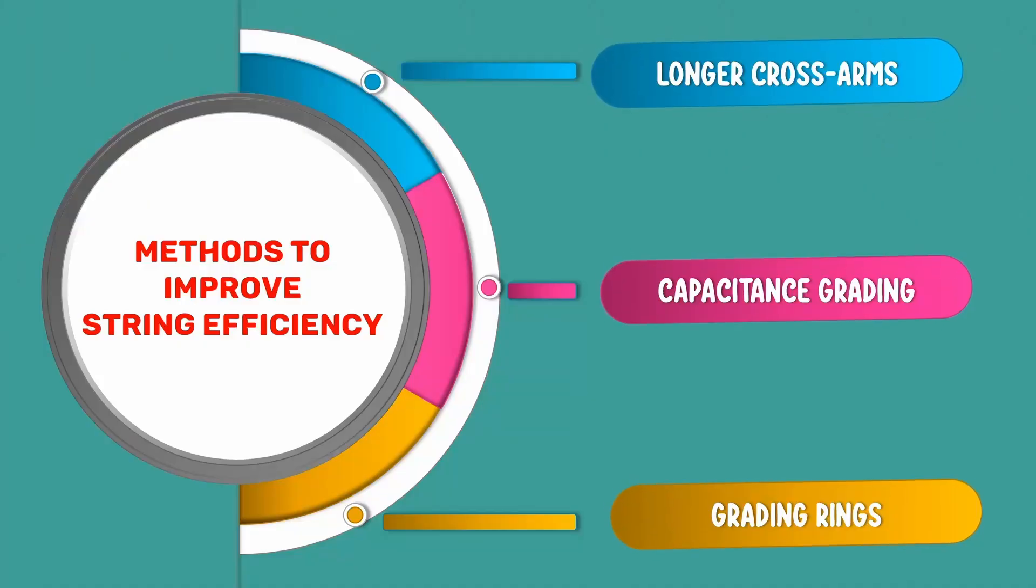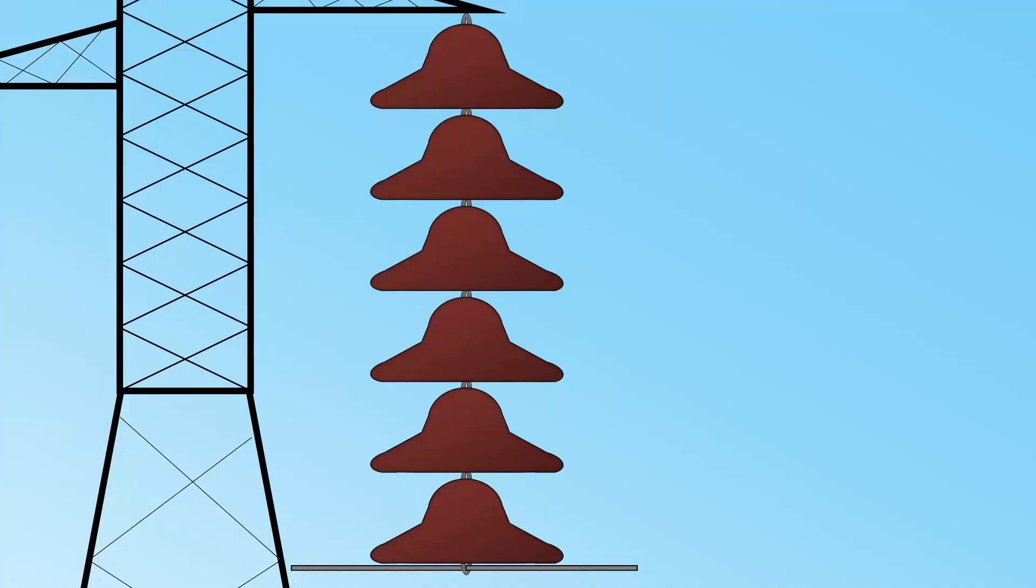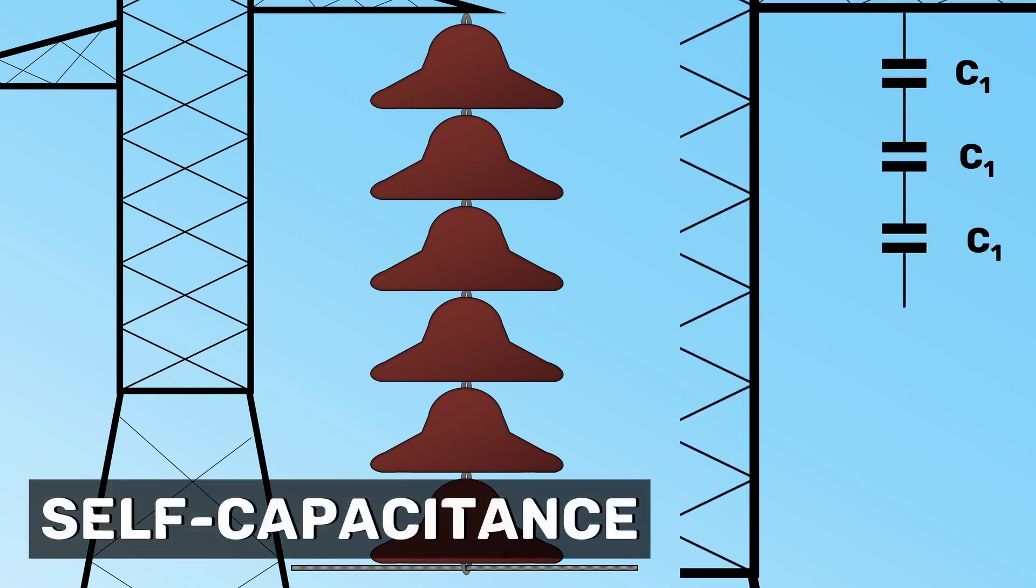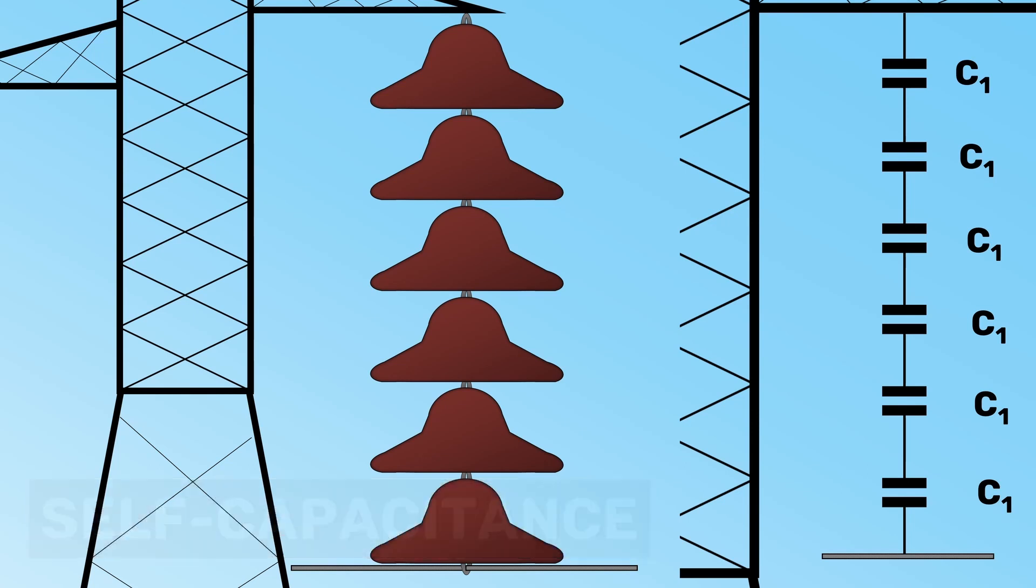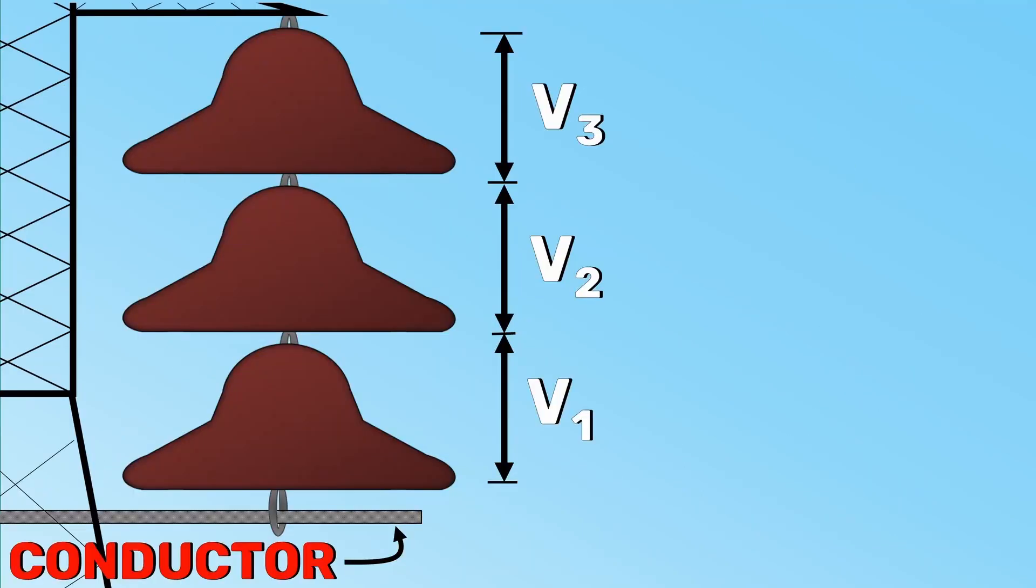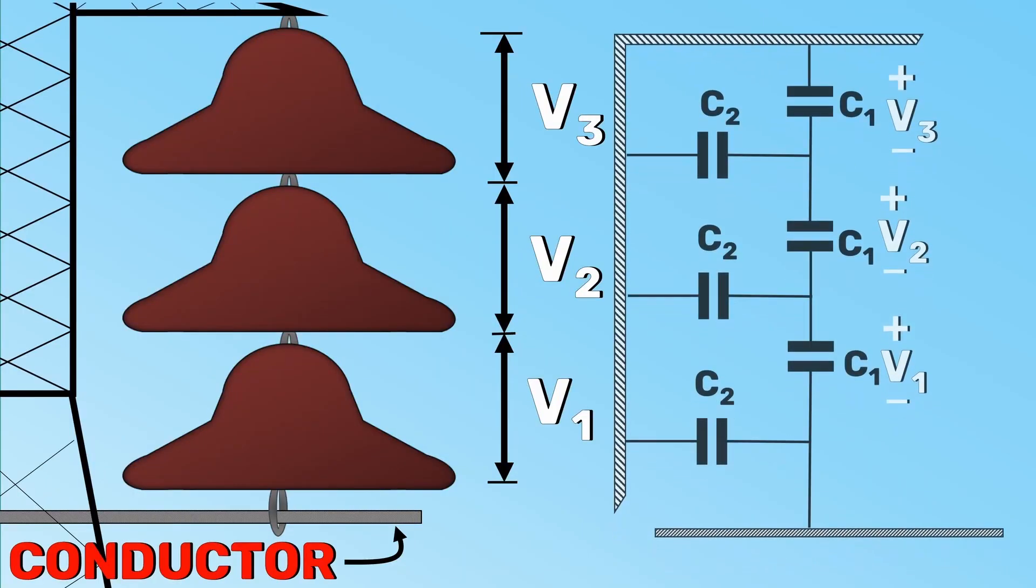There are three main methods to improve the string efficiency. Let's discuss it one by one. The electrical equivalent of the string of suspension insulator consists of self-capacitances and shunt capacitances. For a three-disc suspension insulator,